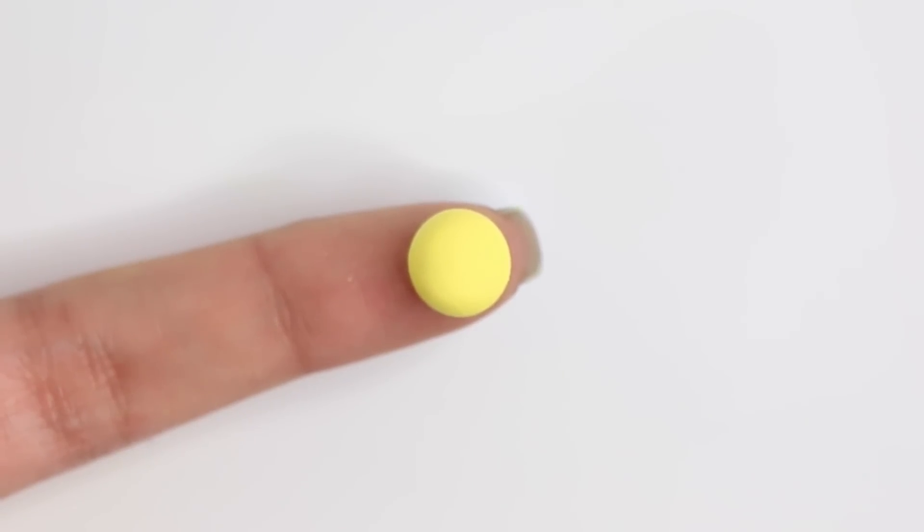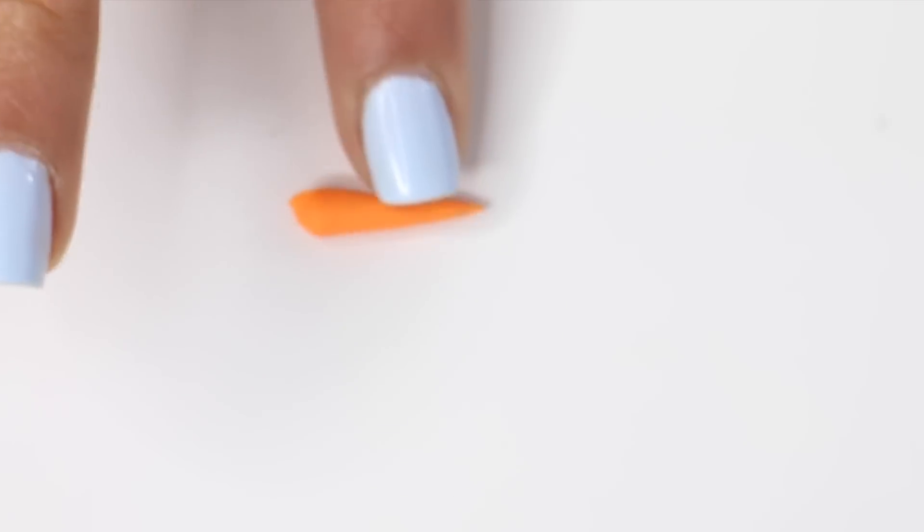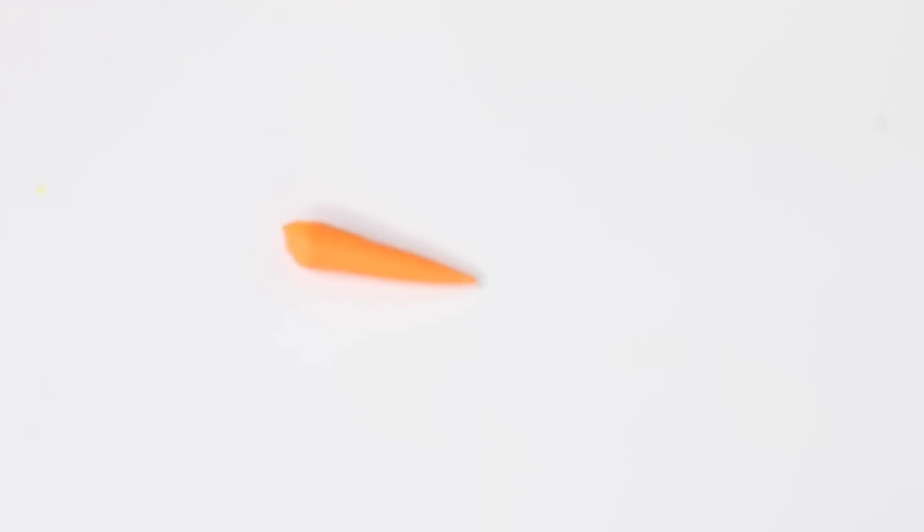So to make the body I have this yellow ball of polymer clay and then to make the beak I'm going to roll out some orange polymer clay and as you can see it's kind of pointed so I'm going to go ahead and cut a piece of that.